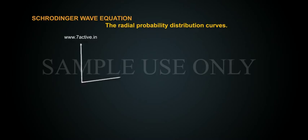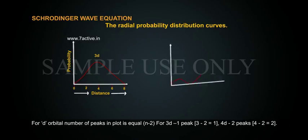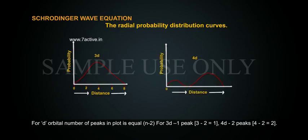The radial probability distribution curves: For D orbital, number of peaks in plot is equal to N minus 2. For 3D, 1 peak, 3 minus 2 is equal to 1.